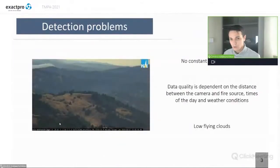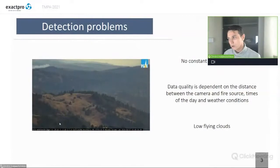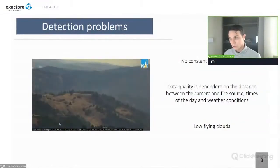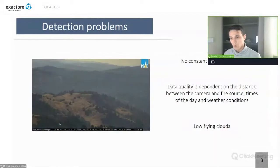However, it has some problems. The smoke doesn't have any constant shape and color. It is very dependent on source and the distance between camera and fire source. It very depends on time of the day, the weather condition. And then there is sometimes low-flying clouds that could be recognized as smoke.